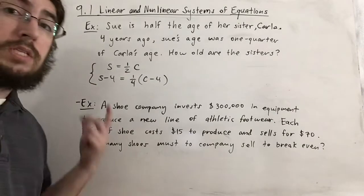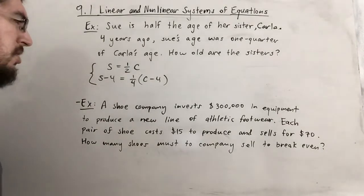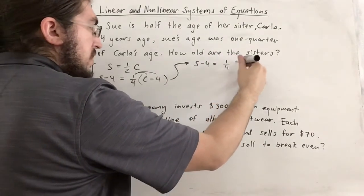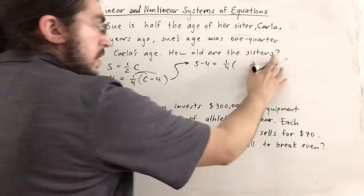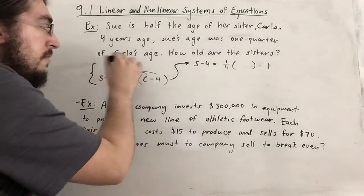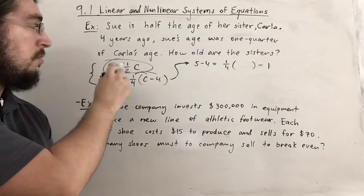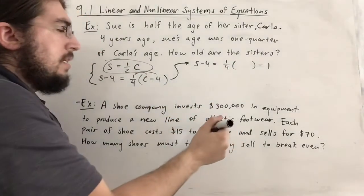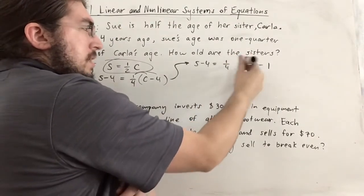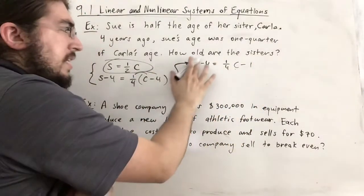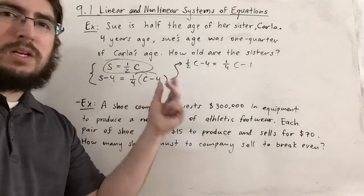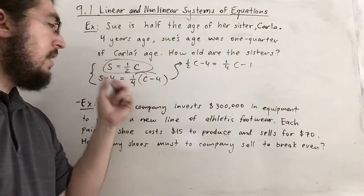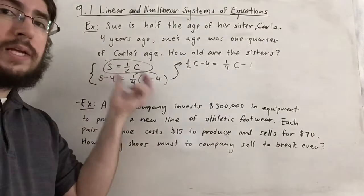To solve by substitution, distribute in the second equation: S − 4 = (1/4)C − 1. From equation 1, S = (1/2)C, so we substitute: (1/2)C replaces S. You could also multiply S = (1/2)C by 2 to get C = 2S and substitute that way. To clear fractions, multiply everything by 4: 2C − 16 = C − 4.